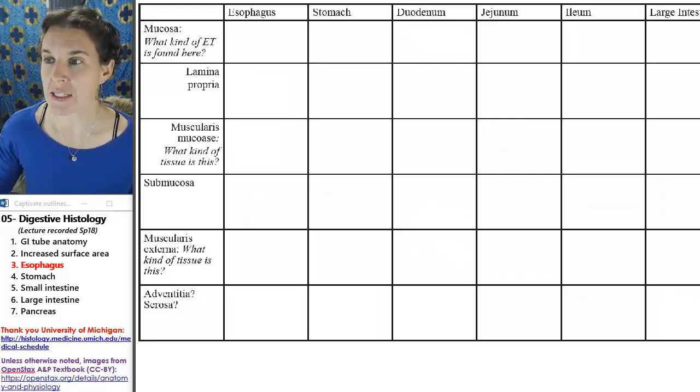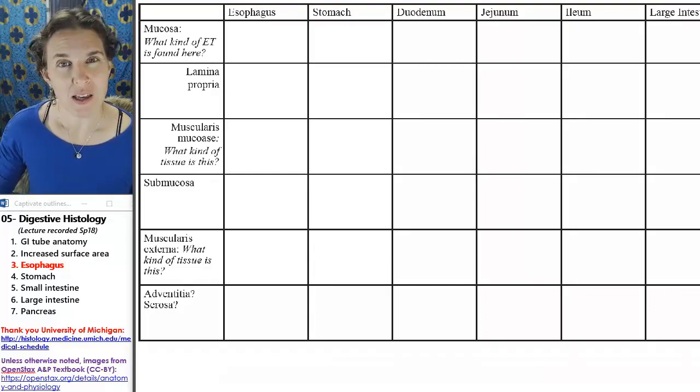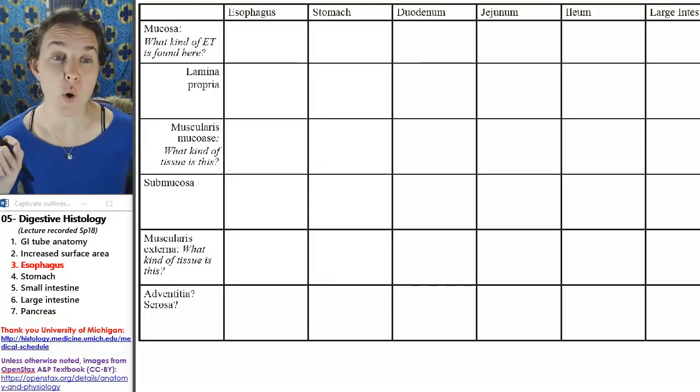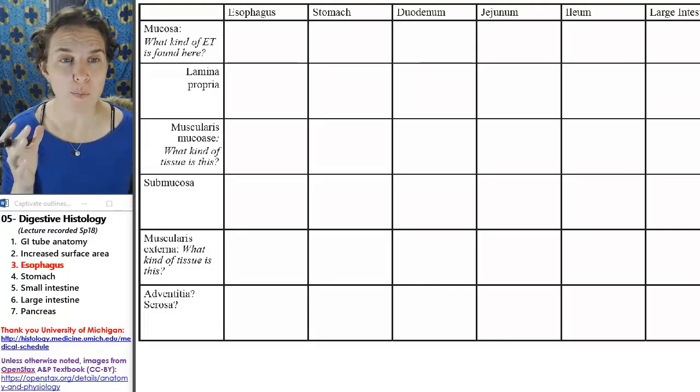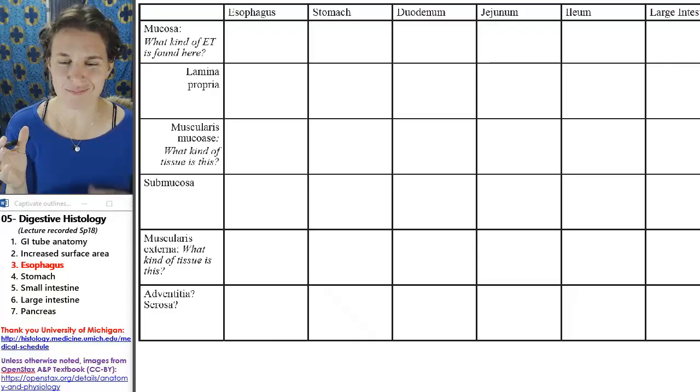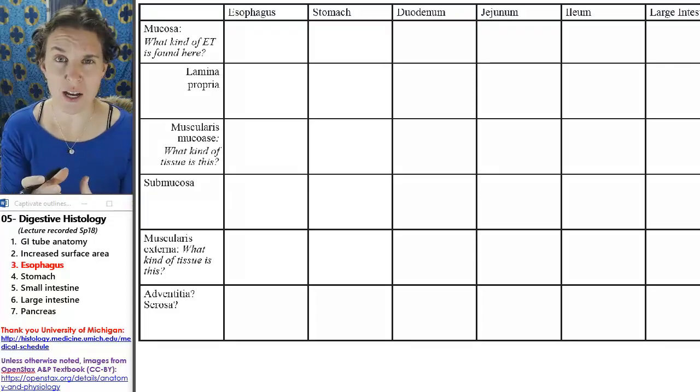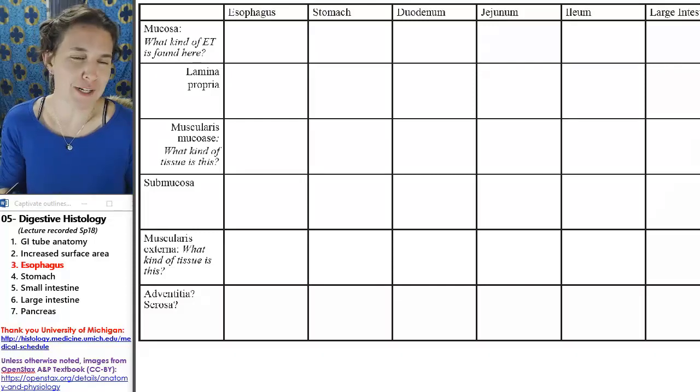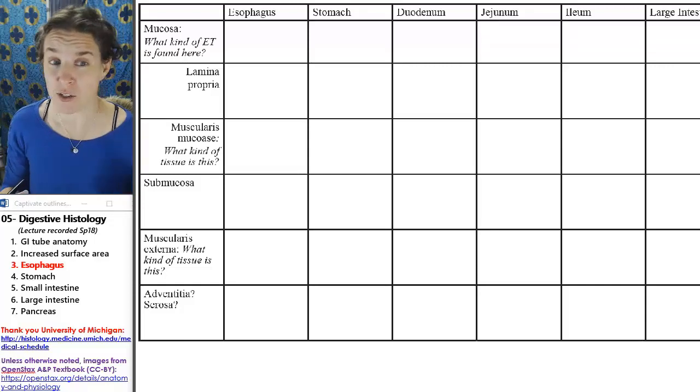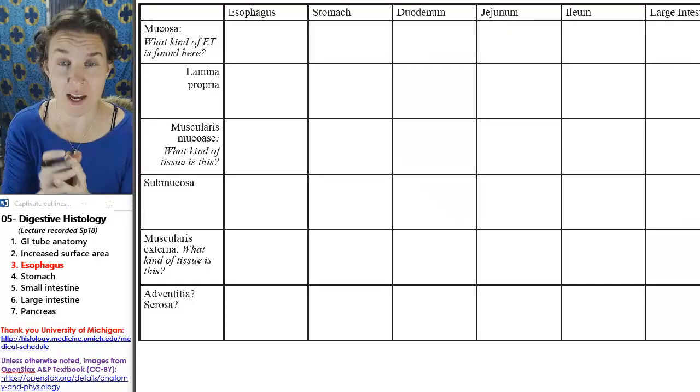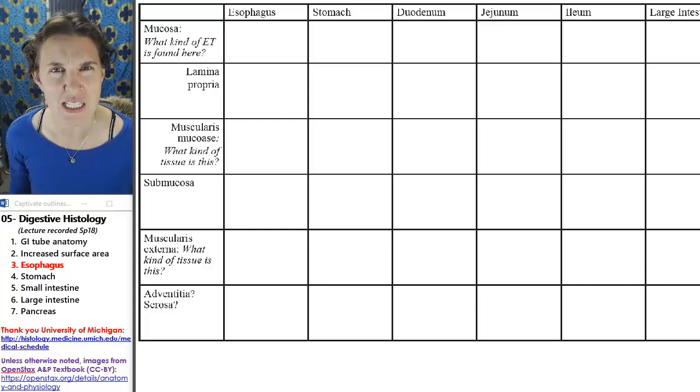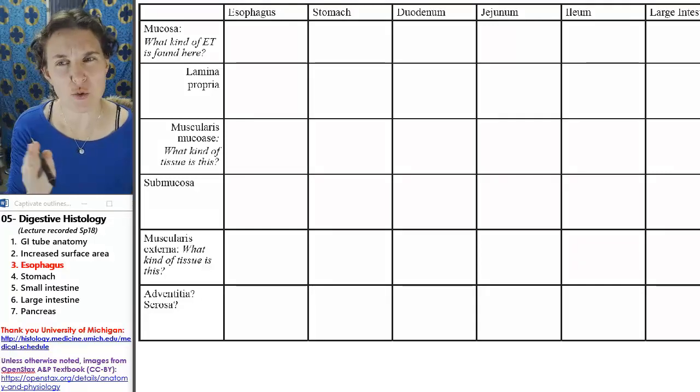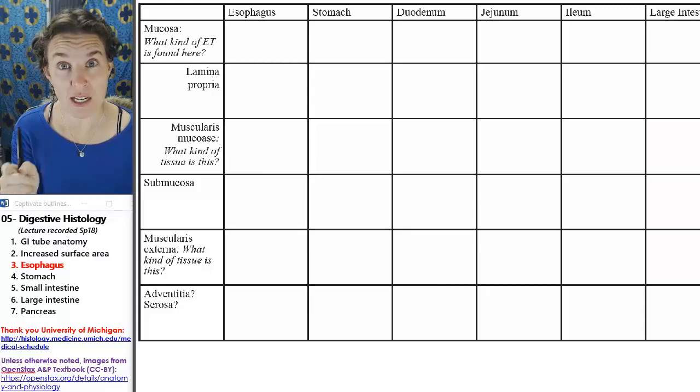So I have a chart, and this is actually attached to the back of your lab, or it's in your external brain handout. The whole purpose of this chart is to help you gather, quantify, and solidify the key characteristics of each part of the digestive tube.